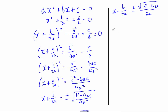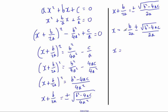Now I just want to isolate x, so I subtract b over 2a from both sides. That gives x equals, and because of the plus or minus I put minus b over 2a in front, then plus or minus the square root of b squared minus 4ac, all divided by 2a. The denominators of both fractions are both 2a, so I can combine them: x equals negative b plus or minus the square root of b squared minus 4ac, all over 2a.